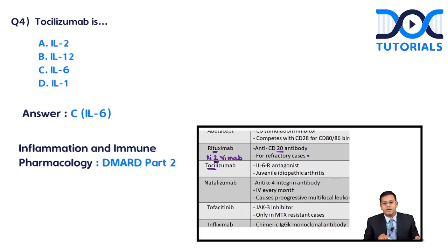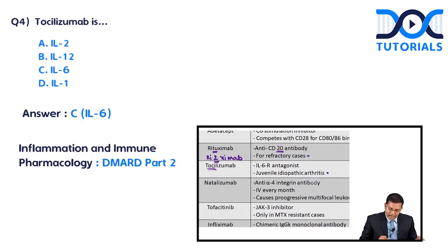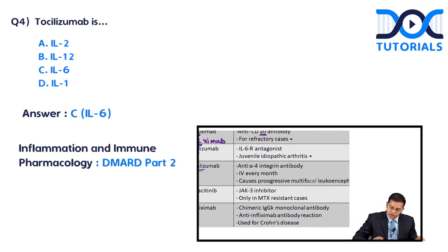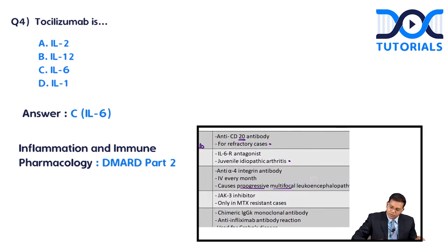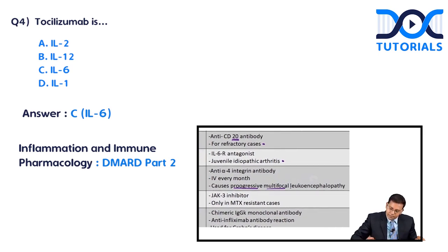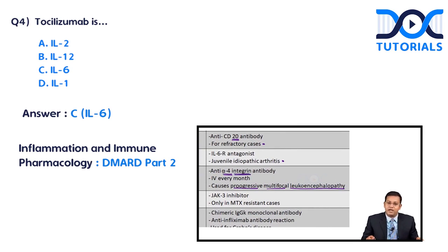Tocilizumab acts against interleukin-6 receptors and is used for juvenile idiopathic arthritis. Natalizumab can cause progressive multifocal leukoencephalopathy, which is an important adverse drug reaction. Natalizumab is an integrin antibody — it prevents the adhesion of cell molecules.